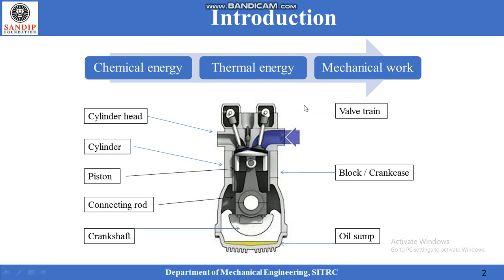The construction of an IC engine is as shown in this figure. It consists of a cylinder in which the piston reciprocates. The reciprocating motion of the piston is converted into rotary motion of a crank by a connecting rod. The connecting rod is connected to the piston at the small end using the gudgeon pin. The big end of the connecting rod is connected to the crankshaft by a crank pin. The main pin of a crankshaft is mounted inside the block of an engine.